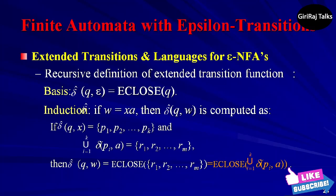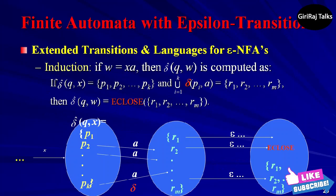Let us see the induction. Suppose w is of the form xa, where a is the last symbol of w. Note that a is a member of Σ. It cannot be epsilon, which is not in Σ. We compute δ̂(q, w) as follows: First, let {p1, p2, ..., pk} = δ̂(q, x). That is, the pi's are all and only the states that we can reach from q following a path labeled x. This path may end with one or more transitions labeled epsilon and may have other transitions as well.